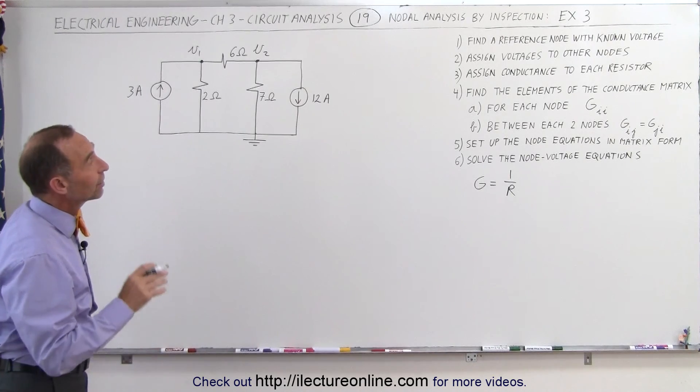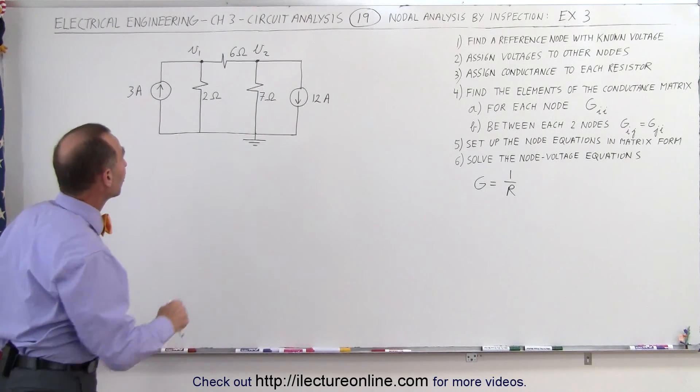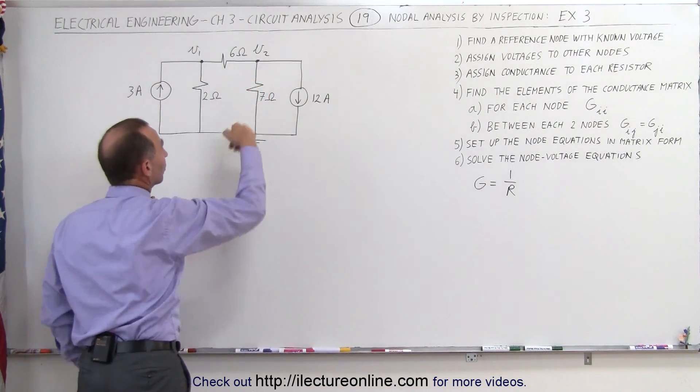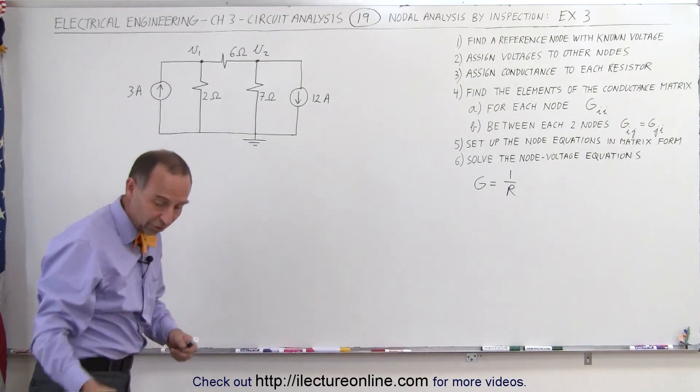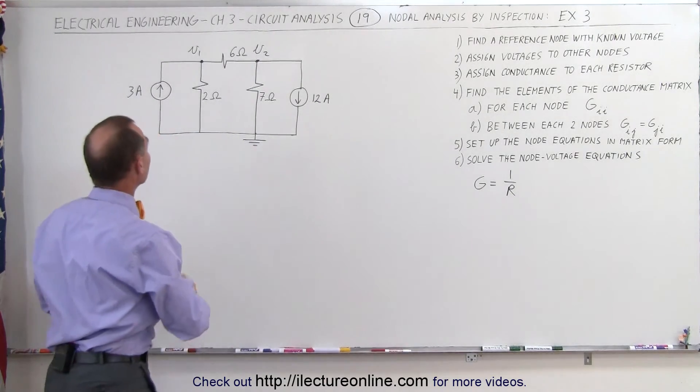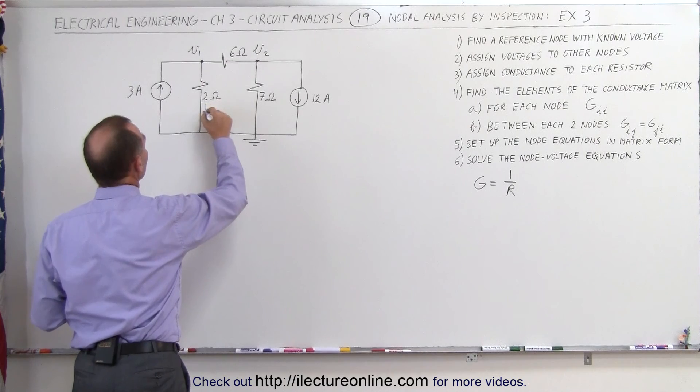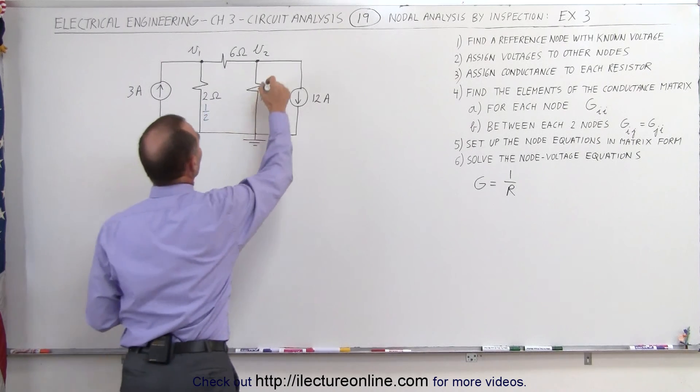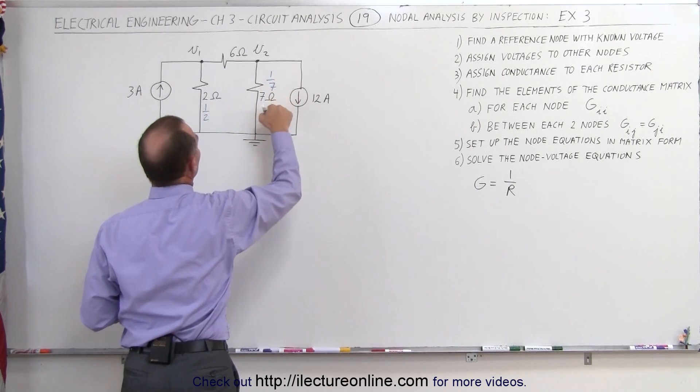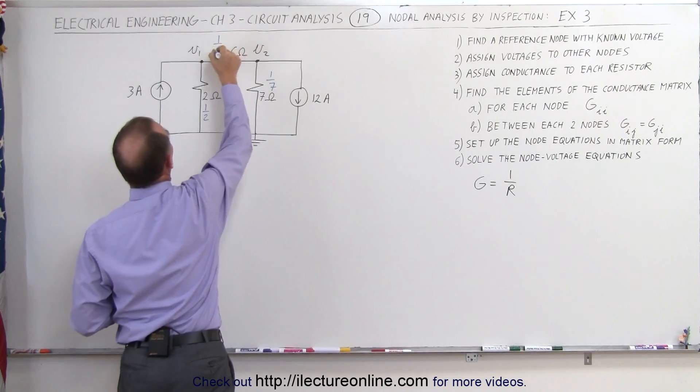The next thing we do is assign conductances to each of the resistors. We have three resistors and the conductance is the inverse of the resistance, so using a different color here we'll write this as 1 over 2, that's the conductance of this resistance, 1 over 7, the conductance for this one, and here we write 1 over 6.